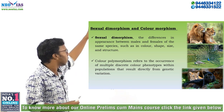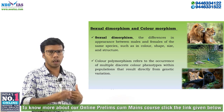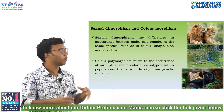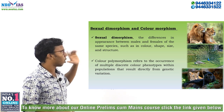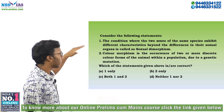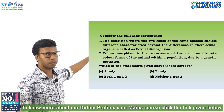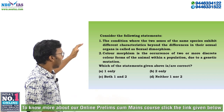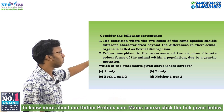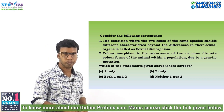Since sexual dimorphism and color morphism are somewhat confusing terms, UPSC can ask questions about them. Consider the model question: Statement 1 — the condition where two sexes of the same species exhibit different characteristics beyond the difference in their sexual organs is called sexual dimorphism. Statement 2 — color morphism is the occurrence of two or more discrete color forms of an animal within a population due to genetic variation. Both statements are correct, so the answer is C: both 1 and 2.